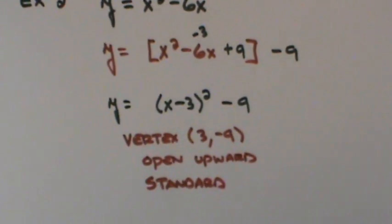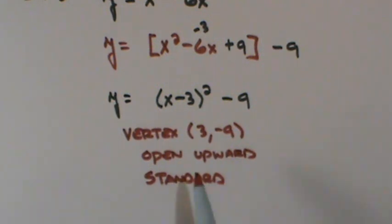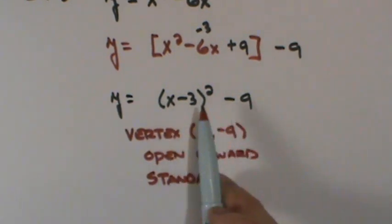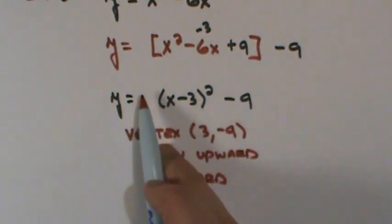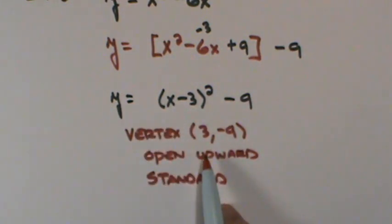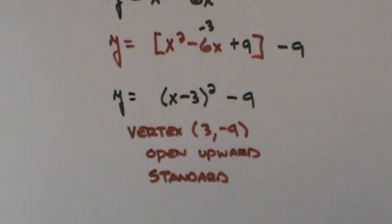So I know all that information, just from that h,k form. I got my vertex, I took the opposite of what was in the parenthesis. I kept what was on the outside. I look at this scalar, this multiplier that's in the front here. And when it's positive, I know it opens upward. And because it was 1, it was a standard opening.